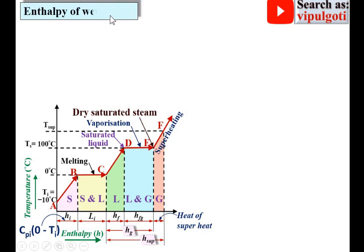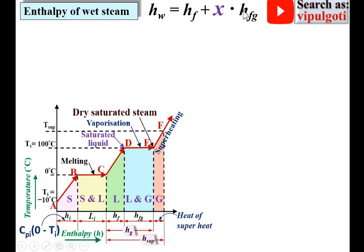First, enthalpy of wet steam. The symbol for the enthalpy of wet steam is Hw — it is the specific enthalpy. Hw, the enthalpy of wet steam, is Hf plus x into Hfg, where Hf is the enthalpy of the fluid, x is the dryness fraction, and Hfg is the enthalpy of evaporation. The wet steam is in between points D and E. You can understand this as Hf plus a portion of Hfg, and that's why it is x into Hfg, where x is always less than 1.